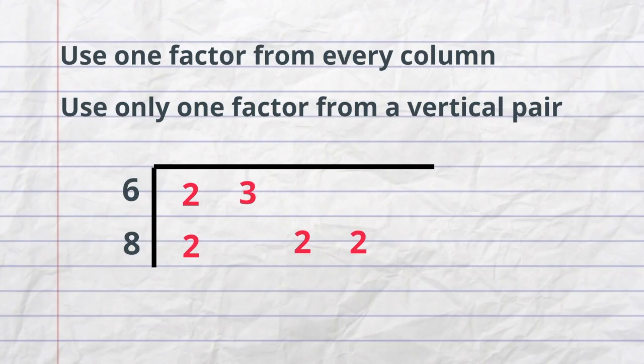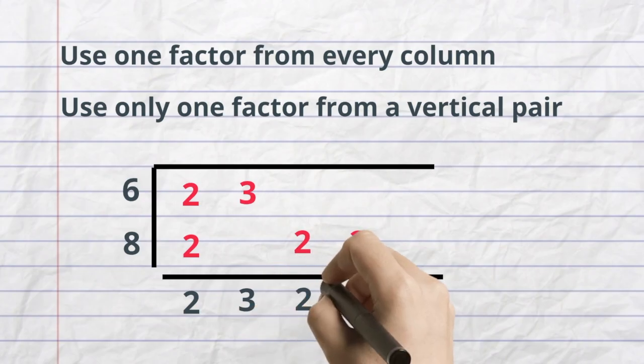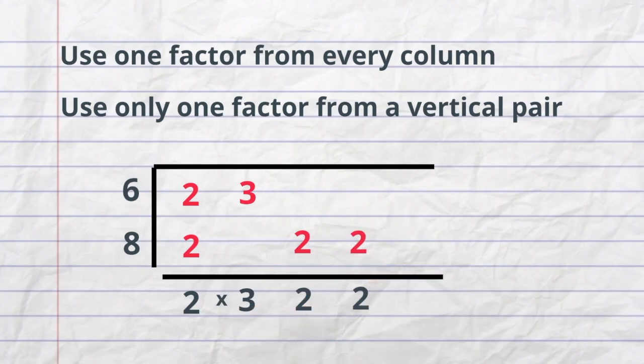So first we have 2 and 2. It's a vertical pair. So I would just write 2. The next column is 3. So I will have 3. Then I will multiply 2 and 2. So I have 2 times 3 times 2 times 2 and that equals 24. So the least common multiple of 6 and 8 equals 24.